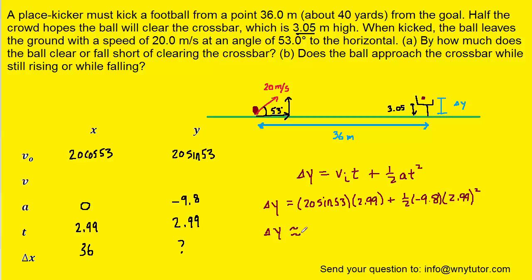And when you calculate that, you should get approximately 3.94 meters. So that's the vertical displacement of the football once it reaches the goal post.